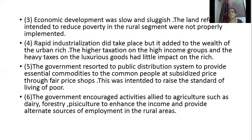The fourth strategy: rapid industrialization did take place, but it added to the wealth of the urban rich. The government imposed higher taxation on high income groups and heavy taxes on luxurious goods to redistribute wealth, but these had little impact on the rich.